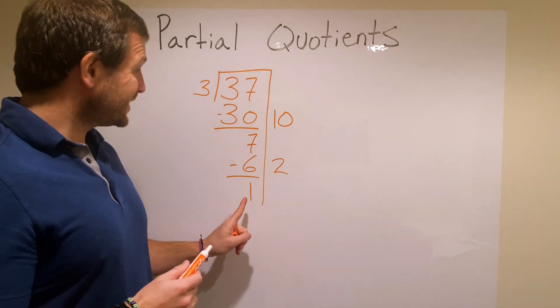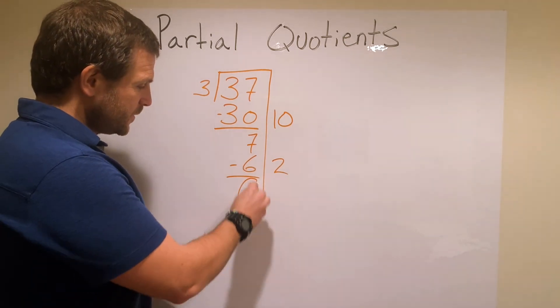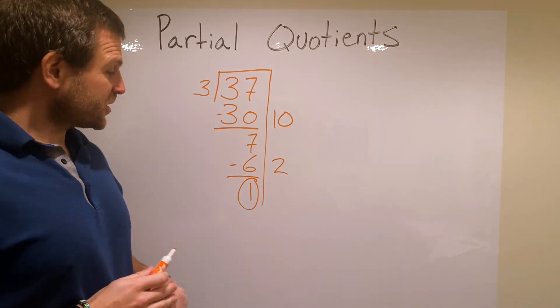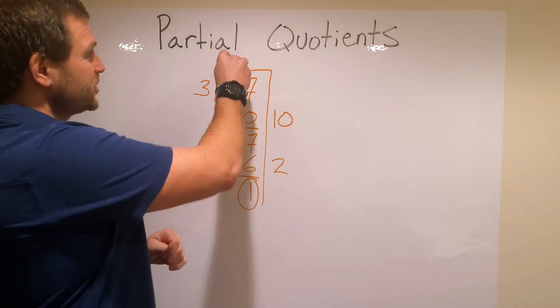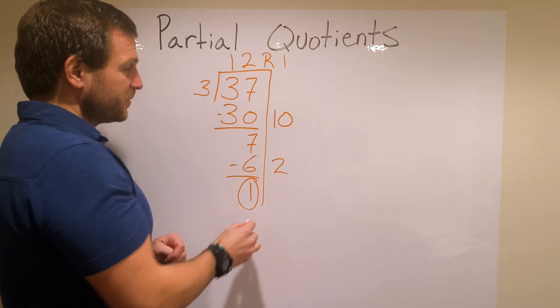My last question: can I remove any groups of 3 from 1? I can't. It's less than. So I circle it. 10 plus 2 is 12, remainder 1 from down here.